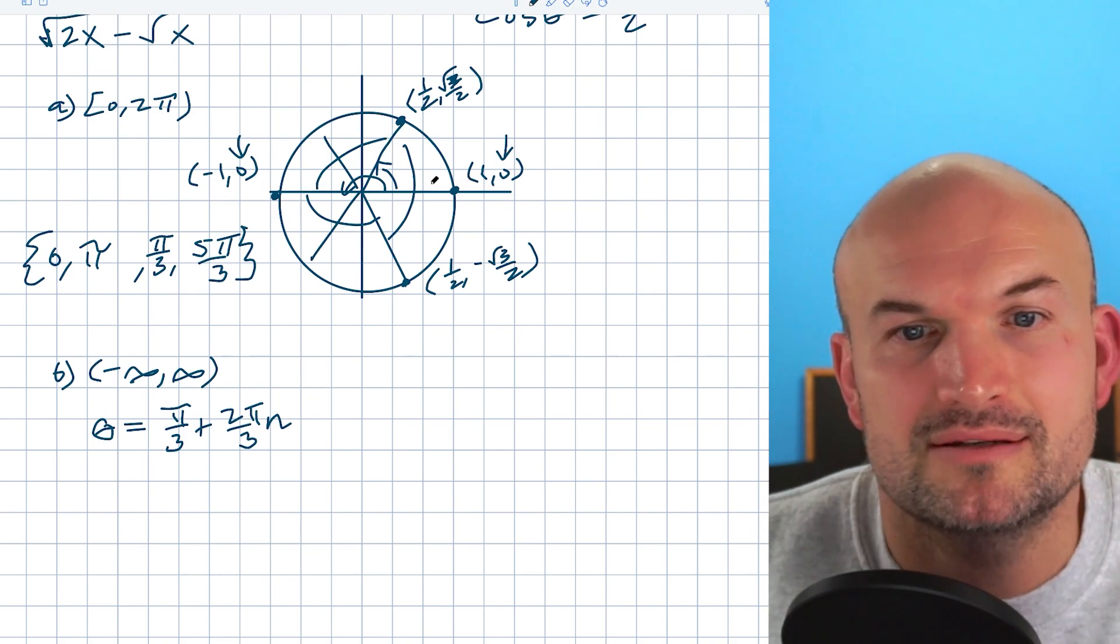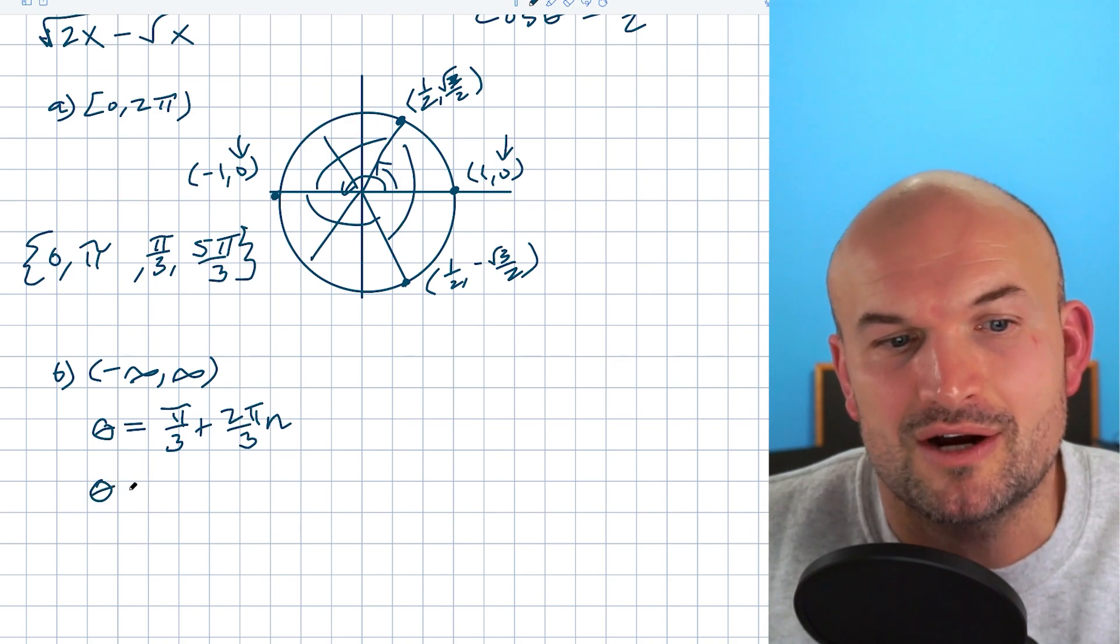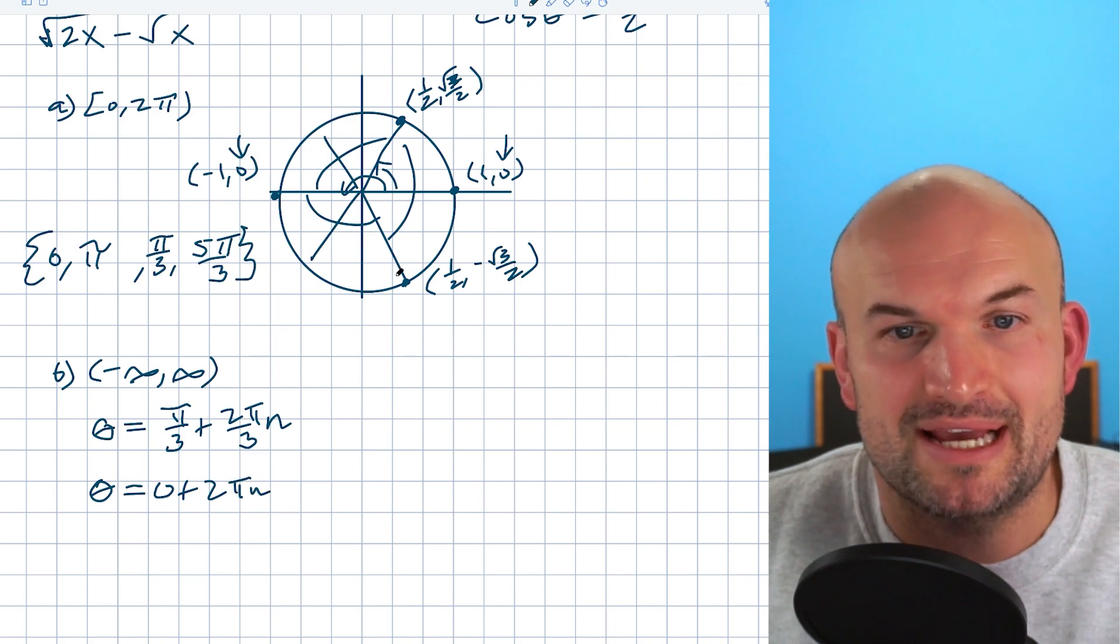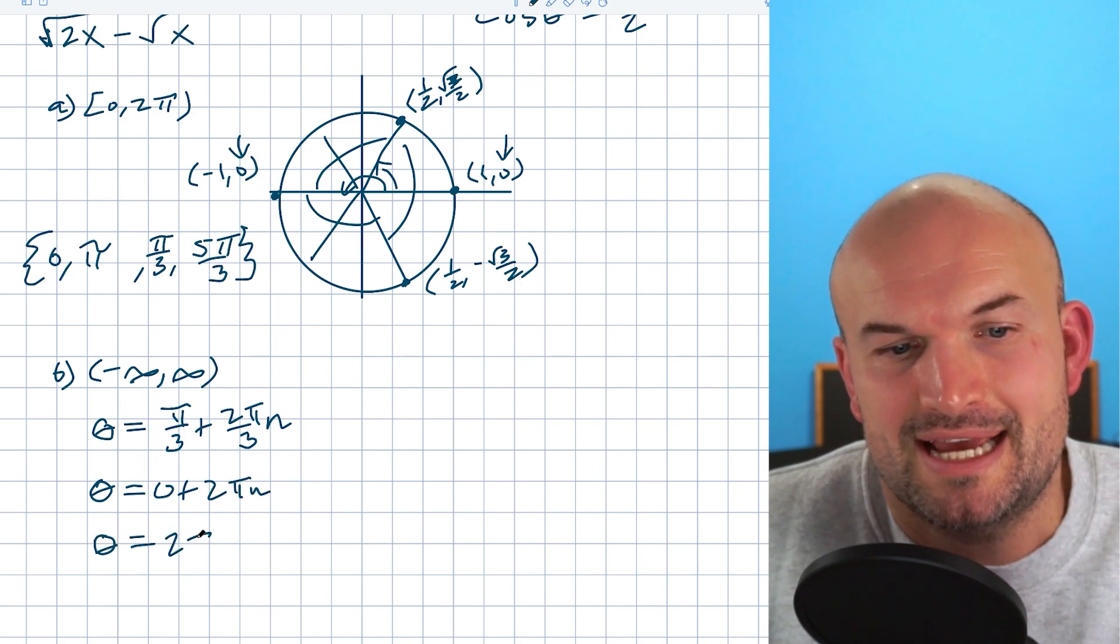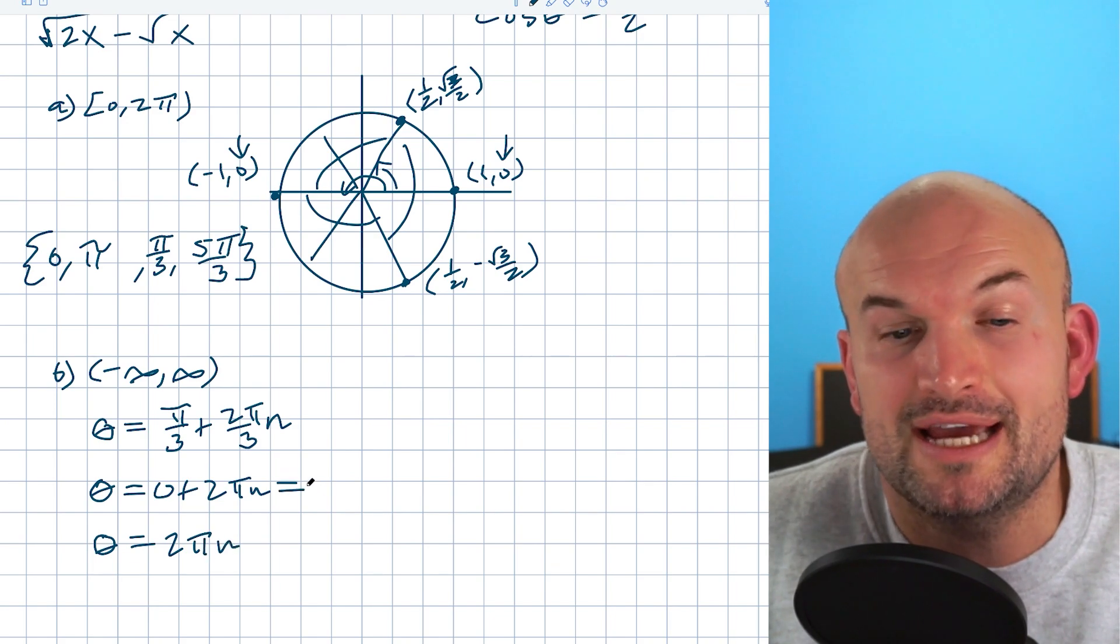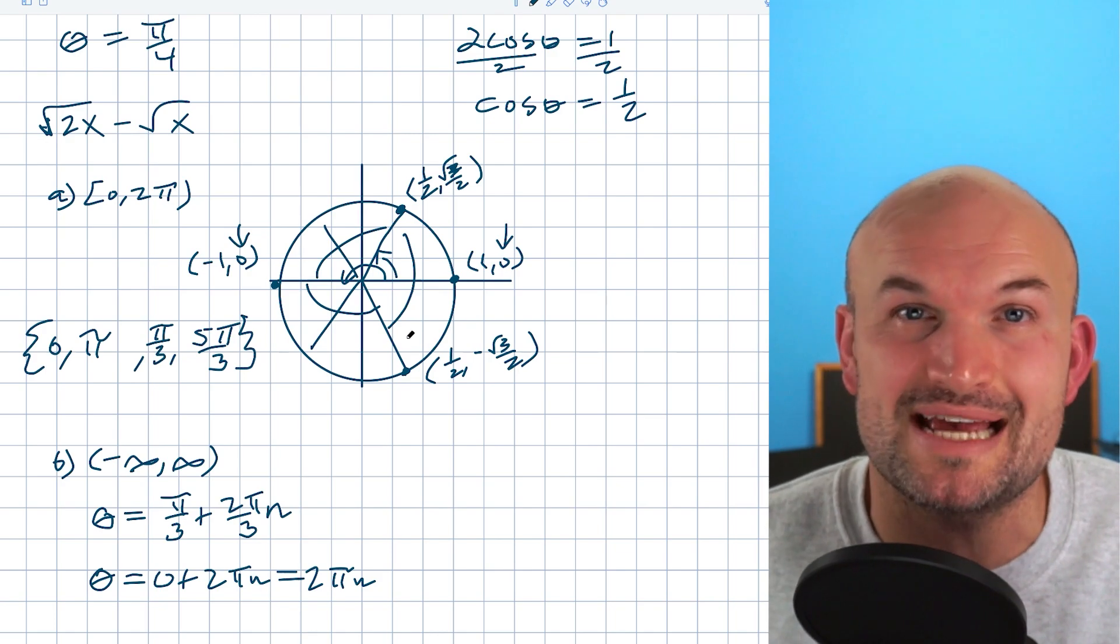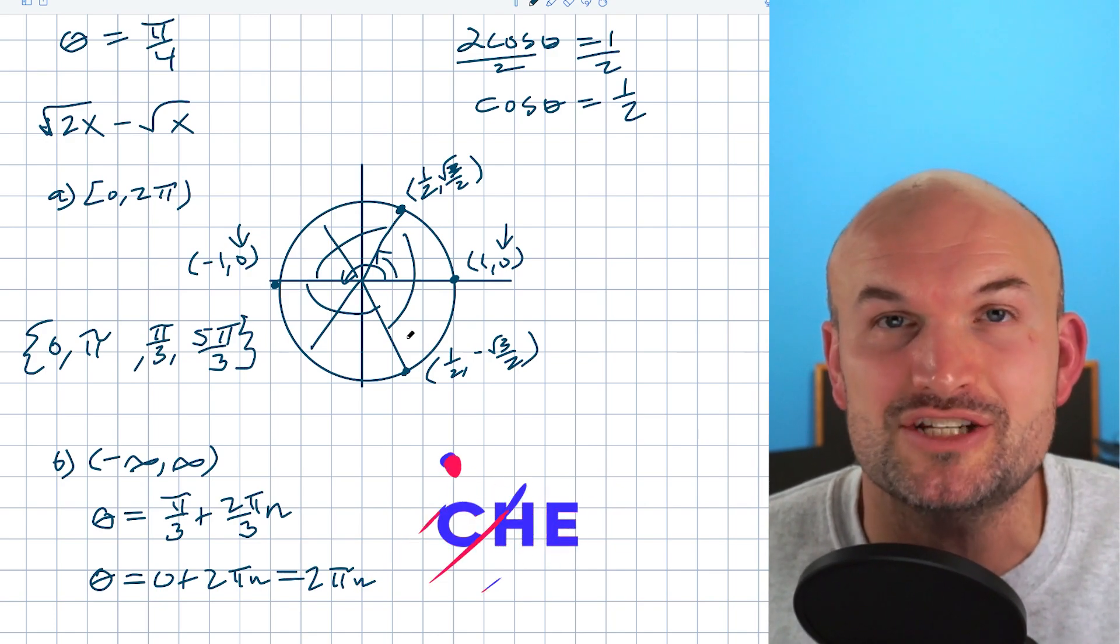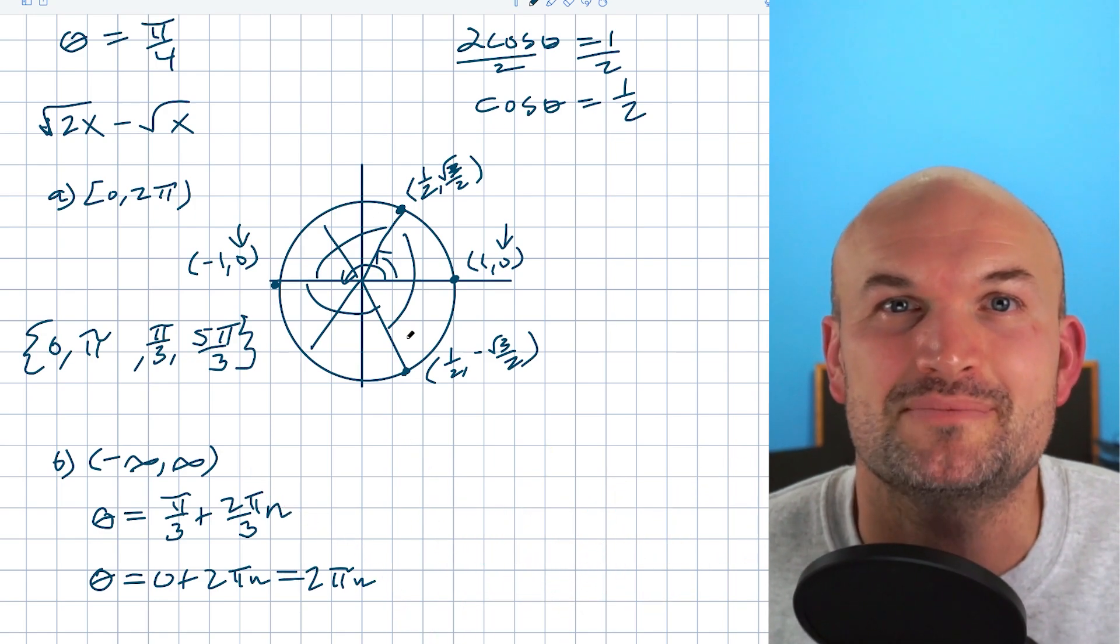The other solution we have is zero. Since the other solutions are taken care of, I'll write zero plus 2πn, or just 2πn. So there you go, ladies and gentlemen. I hope this video was helpful. If you want more examples of solving trigonometric equations, check out the examples and reference materials I have for you below, or check out the next video. Cheers.